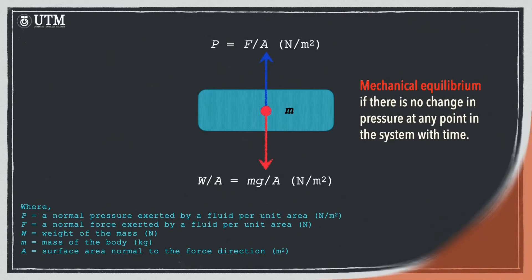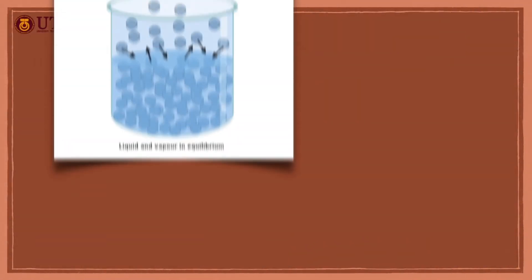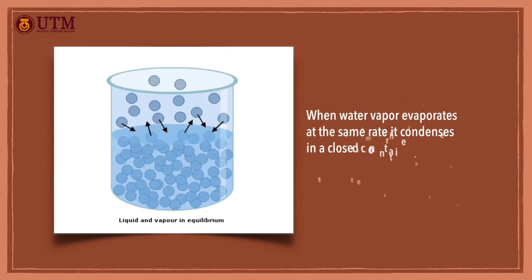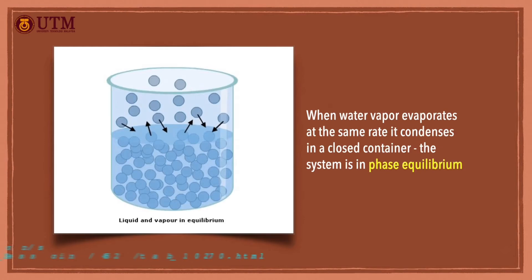A system is in phase equilibrium when the substance it holds encounters two phases where the mass of each phase reaches an equilibrium level and stays there. For example, as shown here, when water vapor evaporates at the same rate as it condenses, in a closed container.